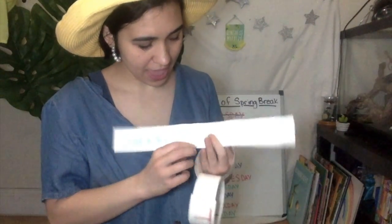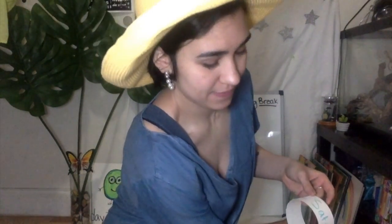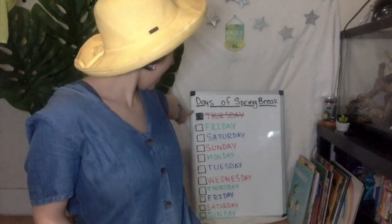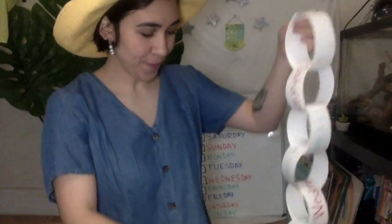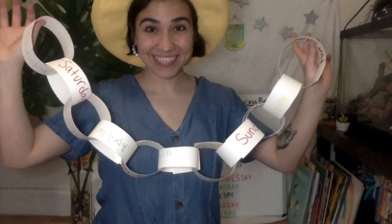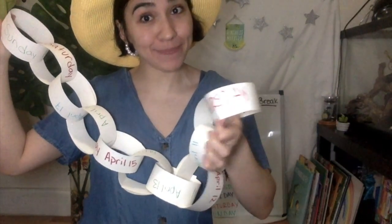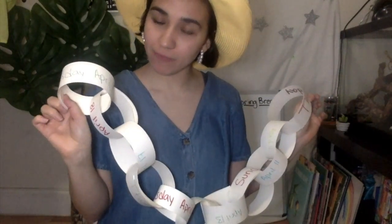Let's keep going. I got Saturday, April 11th — I'm going to loop it around and staple it. I'm going to do this for every date, going all the way from Thursday, April 9th, all the way to Sunday, April 19th. When I'm all done I'll show you. I have my chain link from Thursday, April 9th, all the way to Sunday, April 19th.